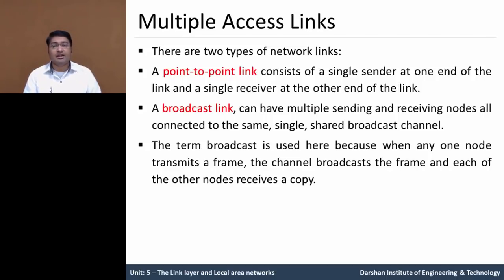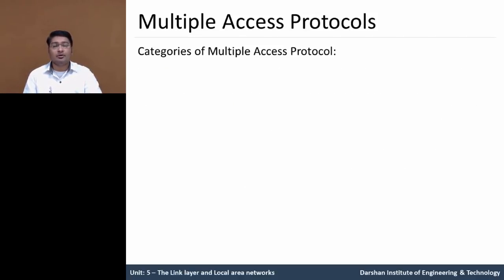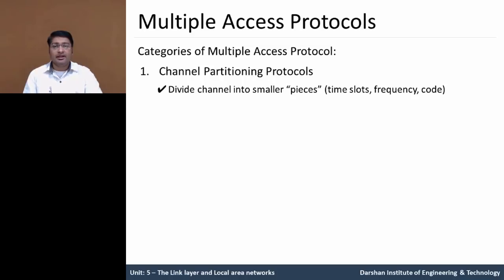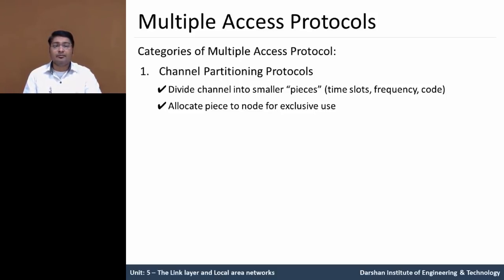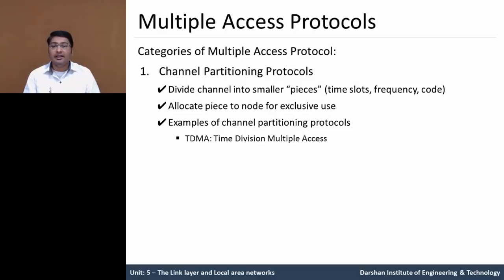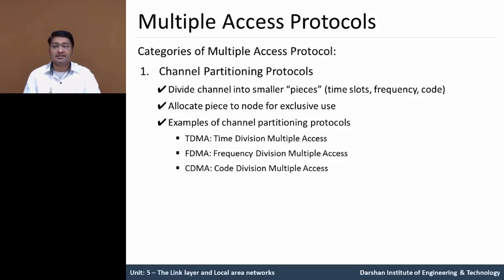Let us understand the multiple access protocol. In multiple access protocols, there are three types. The first one is channel partitioning protocol. In that, it divides a channel's bandwidth into smaller pieces like time slots, frequency slots, or code slots, and allocates each piece to a particular node for exclusive usage. Examples of channel partitioning protocols are TDMA (Time Division Multiple Access), FDMA (Frequency Division Multiple Access), and CDMA (Code Division Multiple Access).